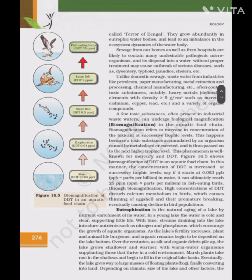A few toxic substances often present in industrial wastewater can undergo biological magnification (biomagnification) in the aquatic food chain. Biomagnification refers to increase in the concentration of a toxicant at successive trophic levels. This happens because a toxic substance accumulated by an organism cannot be metabolized or excreted and is thus passed on to the next higher trophic level. This phenomenon is well known for mercury and DDT (Figure 16.5). The concentration of DDT is increased at successive trophic levels — starting at 0.03 ppb in water, it can ultimately reach 25 ppm in fish-eating birds. High concentrations of DDT disturb calcium metabolism in birds, causing thinning of eggshells and their premature breaking, eventually causing decline in bird populations.